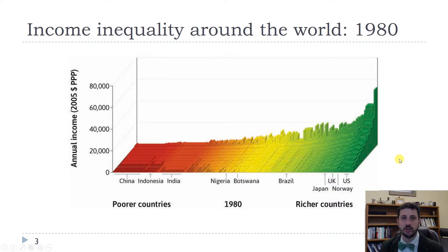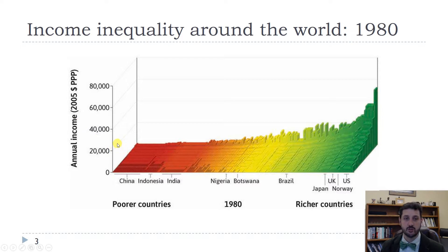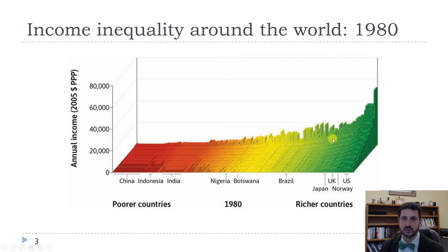This is a graph we saw earlier in the semester. It ranks countries by their average income from poorest to richest. The data is from 1980 and lists income in 2005 purchasing power parity dollars, which controls for both inflation and for different purchasing prices within countries. You can see that most of the world's poor lived in China, Indonesia, and India in 1980, and most of the world's rich lived in the United States, Europe, and Japan.